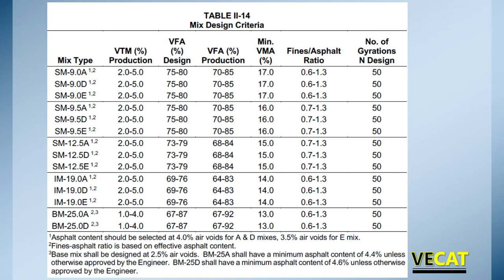Here's the table. A couple notes at the bottom: 4% is what we're targeting for design. During production we're doing 2 to 5. For A and D mixes, we do it at 4%, but for E mixes we do it at 3.5%. That's what the mix designer needs to know. As the Level 2, you're checking the production numbers.